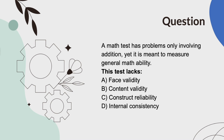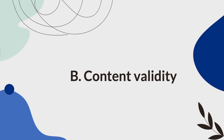A math test has problems only involving addition, yet it is meant to measure general math ability. The test lacks... A, face validity. B, content validity. Or C, construct reliability. And the answer is B, content validity.